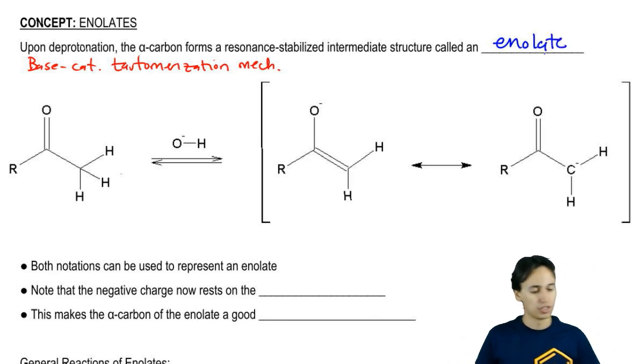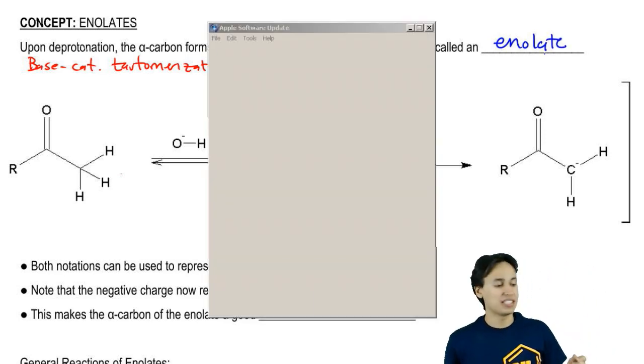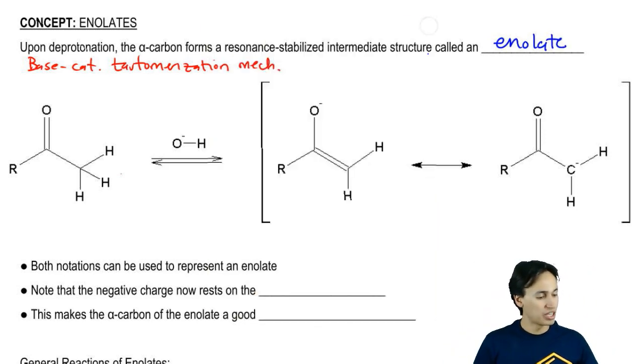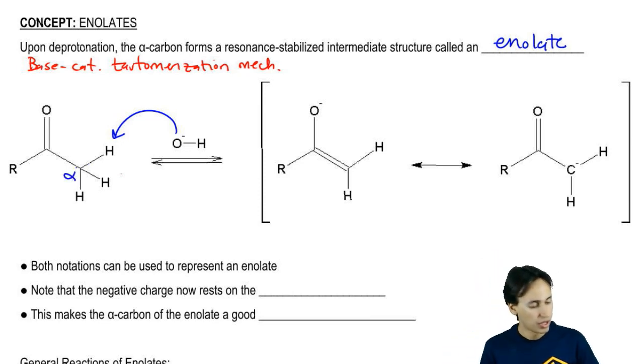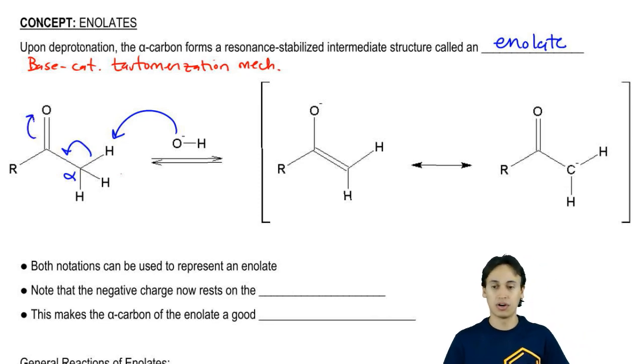Let me show you. Remember that in the base-catalyzed version, what happens is that my O- grabs the alpha proton right away. I wind up forming a double bond here and then kicking electrons up to the O.